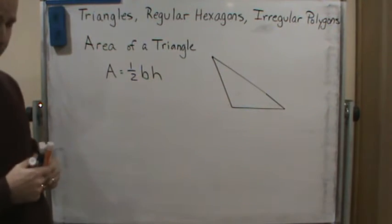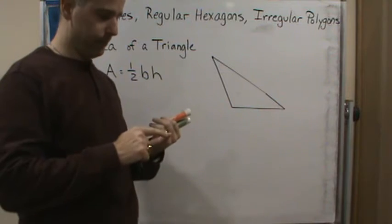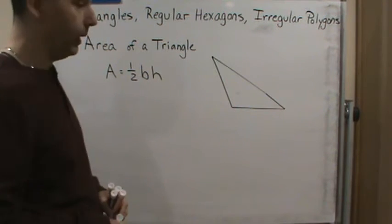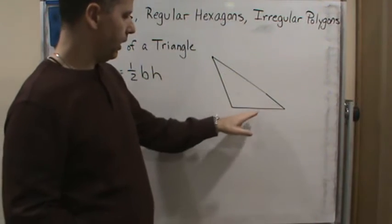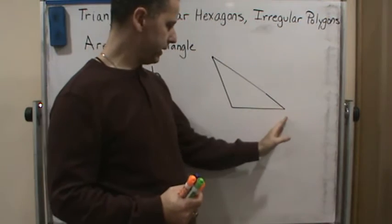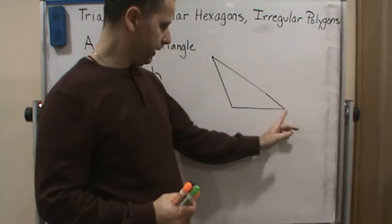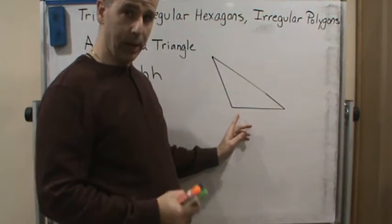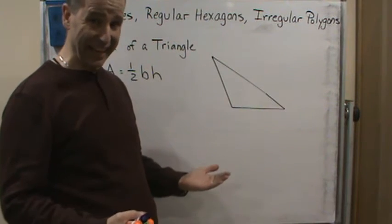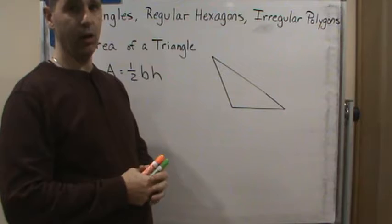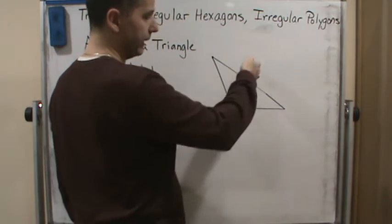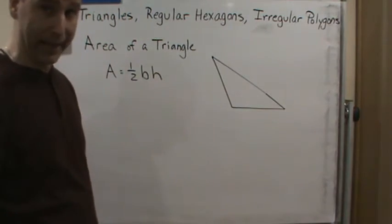Now if we take a triangle, we have to first figure out what the base is and what the height is. Any one of the sides of the triangle could be the base. Typically if it's oriented this way, this would be the base, but it also depends on where the line is that represents the height. If they give us the height, we'll know what the base is because the height is always drawn perpendicular to the base.